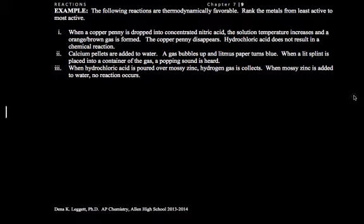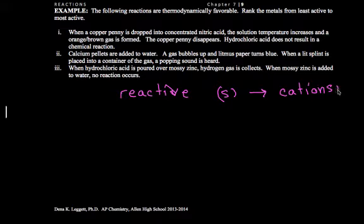So let's take a look at the results of these, and based on that, determine which is the most reactive metal. Reactive metals want to go from their solid form to forming cations plus some number of electrons. That's how we know it's reactive. They want to become the cation and remain in the cation form.